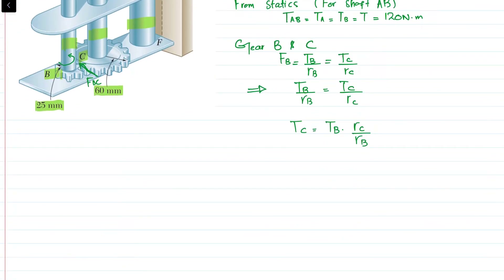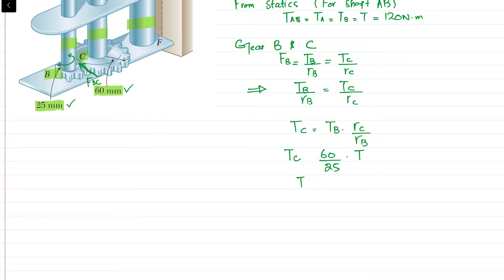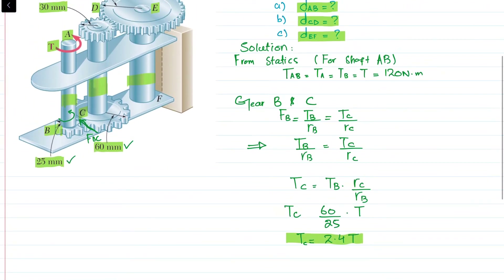So T_C will be equal to T_B multiplied by R_C over R_B. T_B equals T = 120 N·m, R_C is 60 mm, and R_B is 25 mm. So T_C = (60/25) × T = 2.4T.